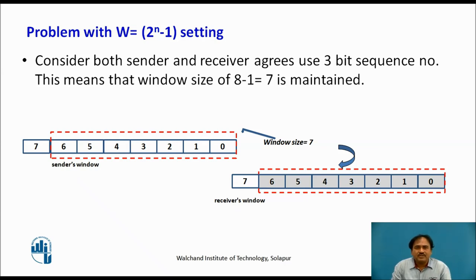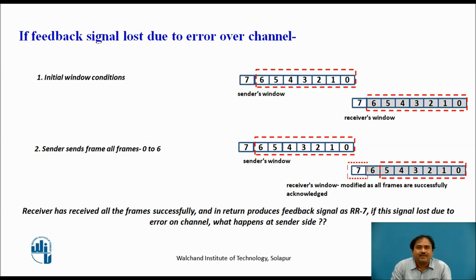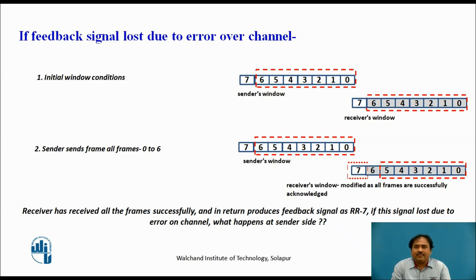The diagram shows a 3-bit sequence number, so we can have sequence numbers from 0 up to 7. The red rectangle marks the legal windows on both the sender and receiver sides. In the initial transmission phase, the sender plans to send frames 0 up to 6. Suppose all frames are received successfully by the receiver, and he gives feedback as RR7, transferring frames to upper layers. The window slides so that the new legal window contains frame 7 and frames 0 up to 5.